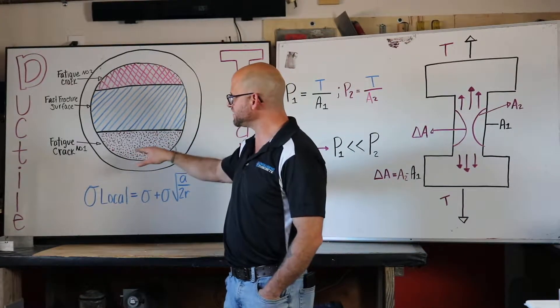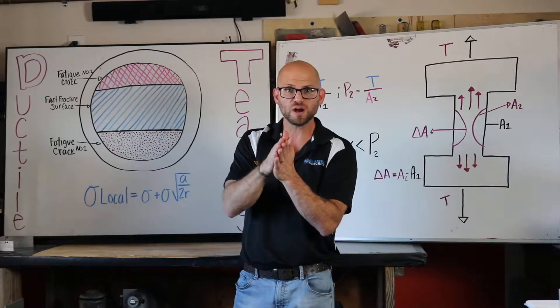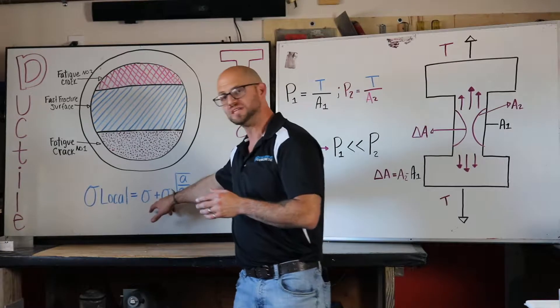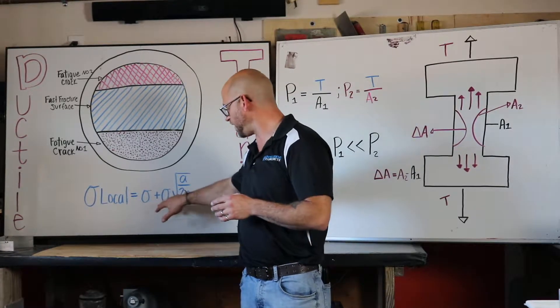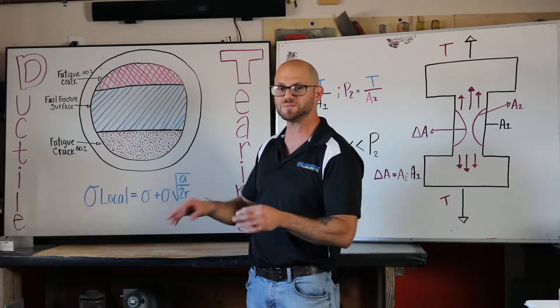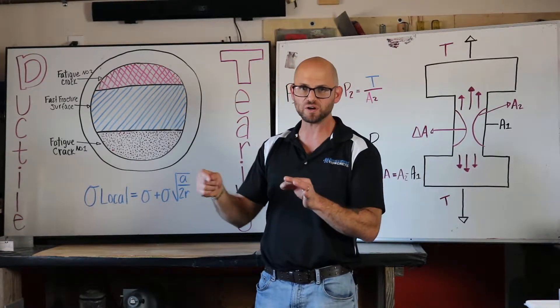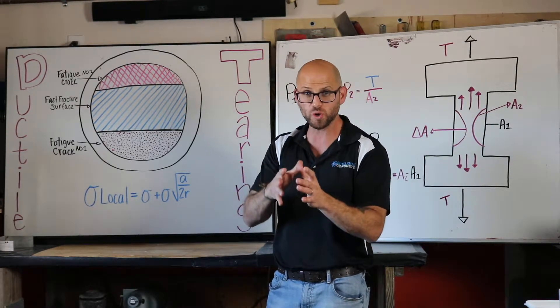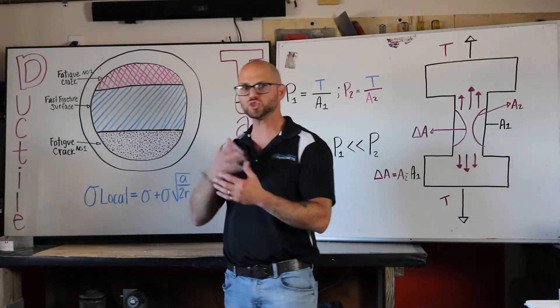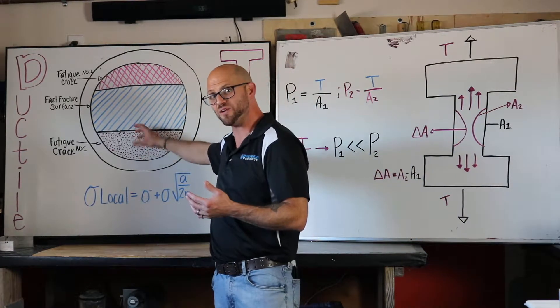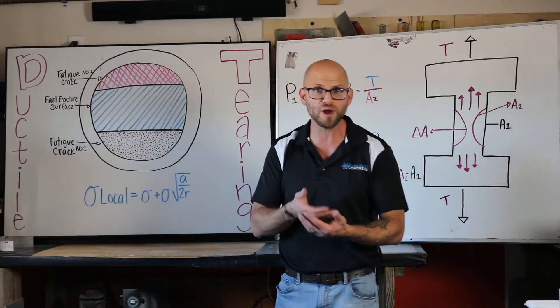The first one we have is this fatigue crack where the localized stresses are σ_local = σ_applied + σ_applied × √(A_ahead/(2r_crack)). So we're adding a certain portion so that the localized stress that is tearing open this crack is greater than the applied stress,